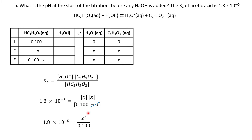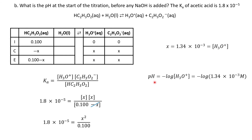Here is my simplified expression. I can solve for X quite easily and get a value of 1.34 times 10 to the negative third. X is my concentration of hydronium, so I can use that to calculate my pH, and I get a pH of 2.872. That's where the titration starts.